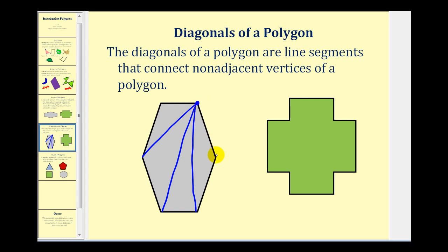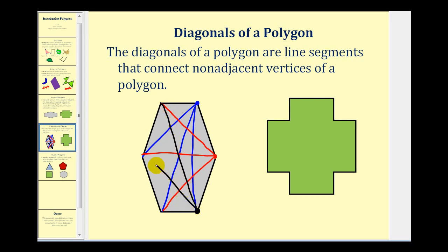If I wanted to sketch the diagonals from this vertex, I would do the same — this would be a side, not a diagonal. So I connect this vertex with this non-adjacent vertex, this vertex with this non-adjacent vertex, and this vertex with this non-adjacent vertex. When we sketch the diagonals from the next vertex, we need to be careful because we will start to experience some repetition. We connect this vertex to this vertex, and then this vertex to this vertex.